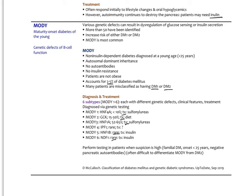If MODY is suspected, the best course is referral to an endocrinologist for current screening and genetic testing. Testing is performed when suspicion is high: familial diabetes with onset under 25 and negative pancreatic autoantibodies. It can be difficult to differentiate MODY from type 2 since there is no direct test for insulin resistance unlike the autoantibody tests. LADA and the different types of MODY are two less common but important types to know about.